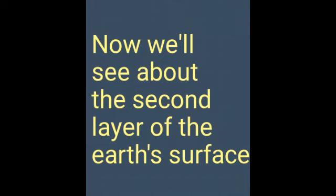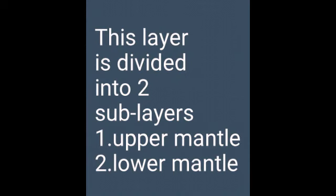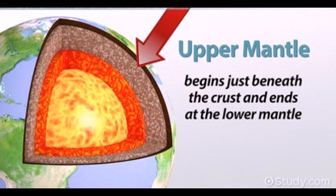Now we are going to see about the second layer of the earth's surface, called the mantle. This lies below the crust, beginning at a depth of around 42 kilometers from the earth's surface. It is divided into upper mantle and lower mantle. The upper mantle is made up of oxygen, magnesium, silicon, and iron, and is about 410 kilometers thick. The temperature of the upper mantle is approximately 200 degrees Celsius at the upper boundary with the crust, and approximately 900 degrees Celsius at the boundary with the lower mantle.